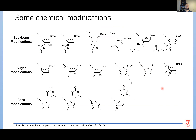For oligonucleotides, we do need to make use of chemical modifications to improve pharmacokinetic properties and stability when delivering them as therapeutics. Here we have a non-exhaustive list of possible chemical modifications used in oligonucleotides. We have backbone modifications — probably the most widely used is the phosphorothioate backbone. There are many others, such as replacement of a bridging oxygen by nitrogen to give the phosphoramidate or the morpholino backbone, peptide nucleic acids, and so on.